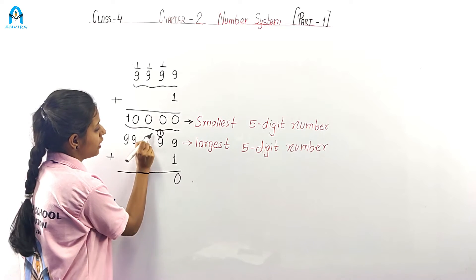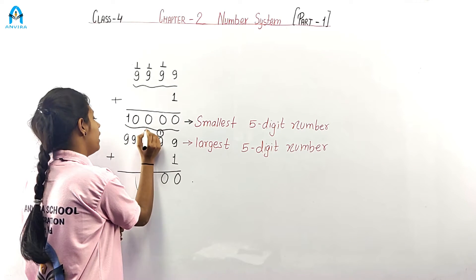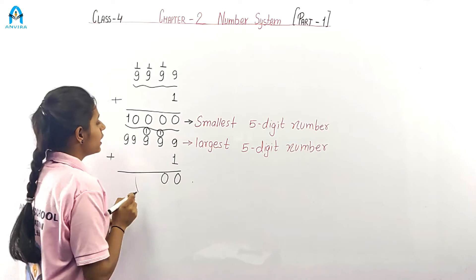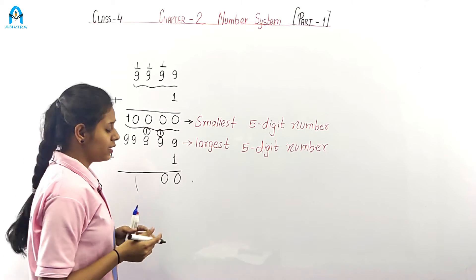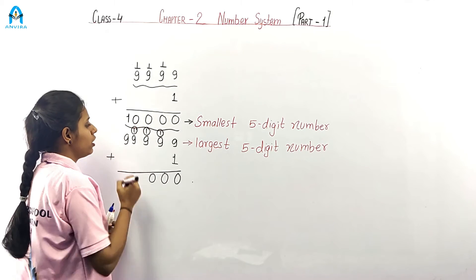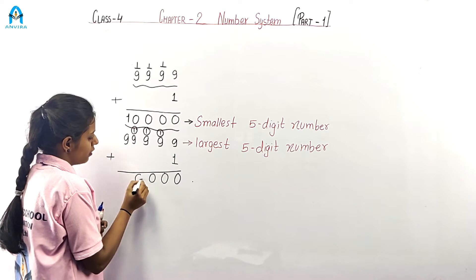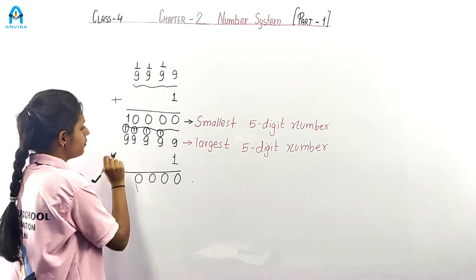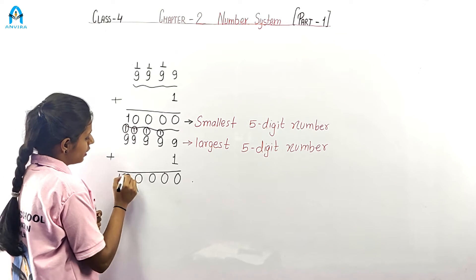So 9 plus 1 is 10 — write 0 here and carry 1. Then 9 plus 1 is 10 — write 0 and carry 1. Again 9 plus 1 is 10 — write 0 and carry 1. Then 9 plus 1 is 10.